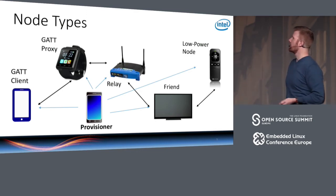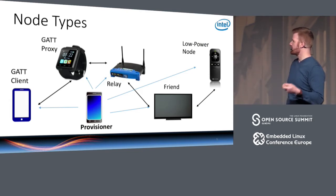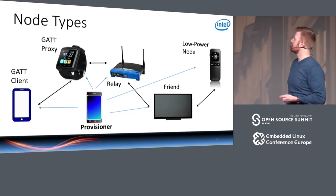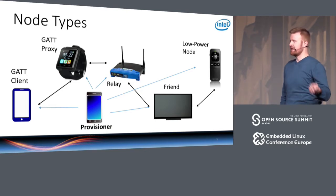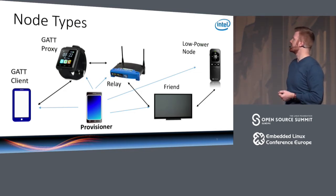You can have one or more devices acting as a relay in the network, responsible for forwarding messages. You will often also have pairs of devices called friends and low power nodes. The general idea is that friend nodes cache messages for low power nodes, which then ask the friend node at set intervals whether there are any messages destined for them.